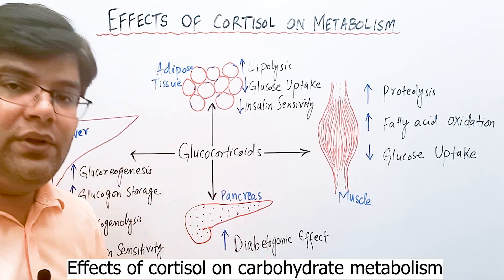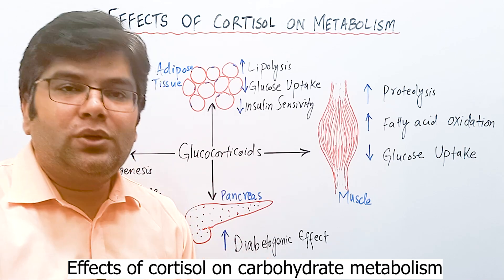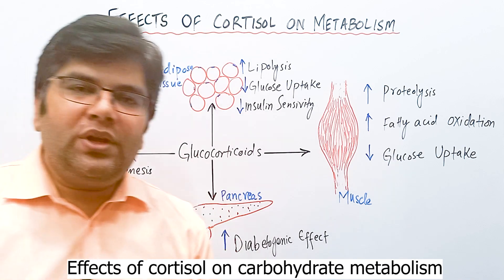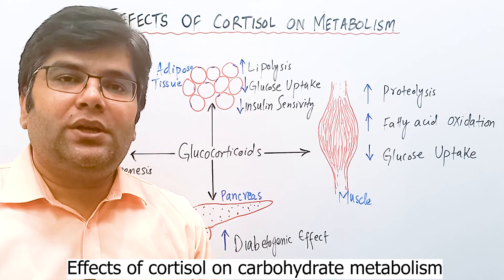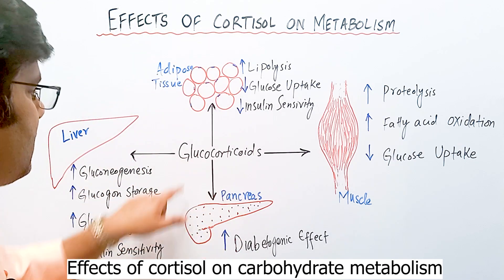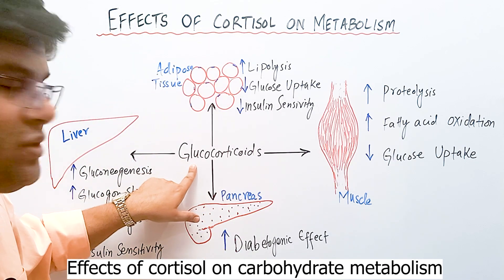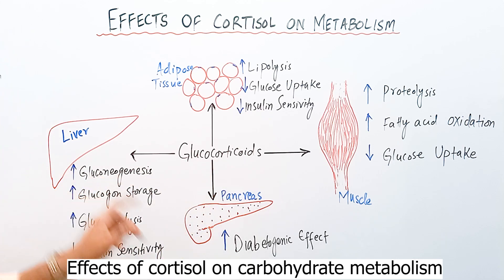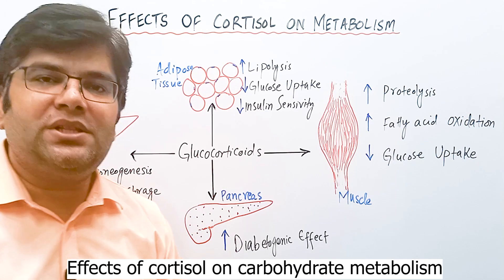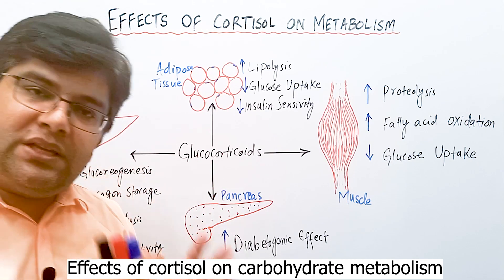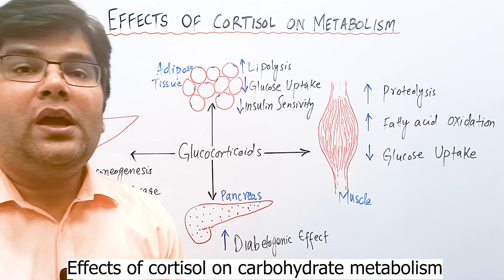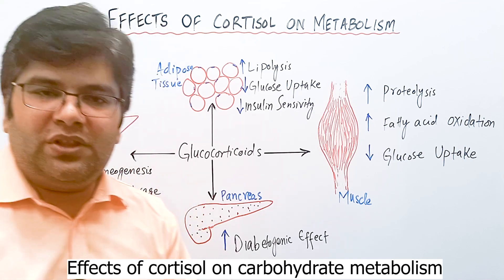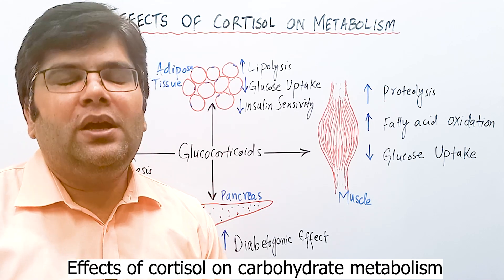Cortisol acts on the liver to increase gluconeogenesis up to 6 to 10 times. Gluconeogenesis means synthesis of new glucose — 'gluco' means glucose, 'neo' means new, and 'genesis' means synthesis. This takes place in the liver and occurs between meals and during fasting.